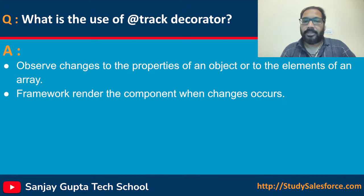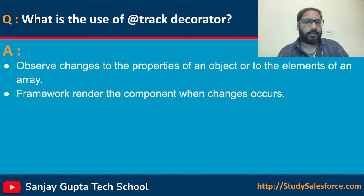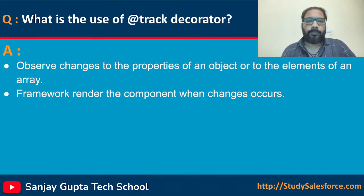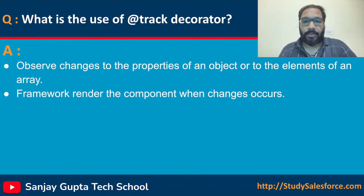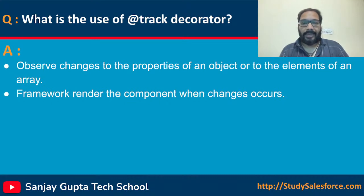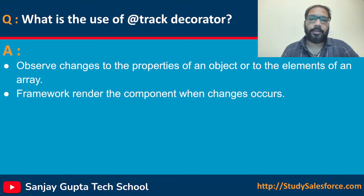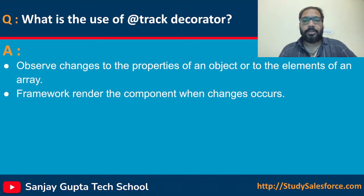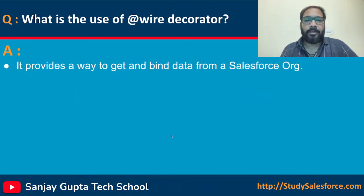For @track: it observes changes to the properties of an object or to the elements of an array, and the framework re-renders the component when changes occur. It is basically used with objects and arrays only for tracking changes. Earlier it was used to declare any property as private, but right now if you don't use @track, a property will automatically be private — limited to that particular component. Still, if you want to expose any property to another component in a parent-child relationship, you need to declare that property with @api, because @api makes it public.